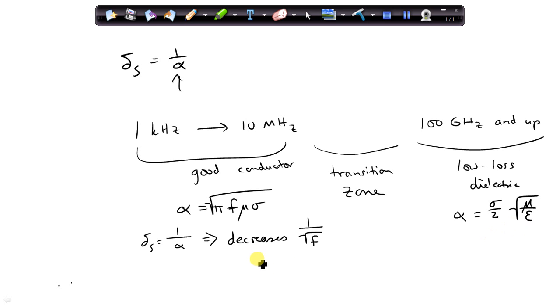So that means we're transitioning from sigma decreasing according to 1 over square root of f, so if we plot it on a log scale, it would be linear. And then there's a transition zone, and then it'll be constant with frequency after that. That's a low-loss dielectric.